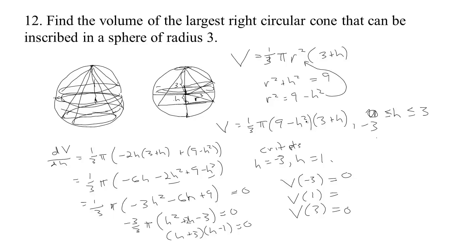And when we plug 1 into our volume formula, let's see. What do we have? 9 minus 1 squared would be 8. And 3 plus 1 would be 4. 8 times 4 is 32. So, we have 32π over 3.